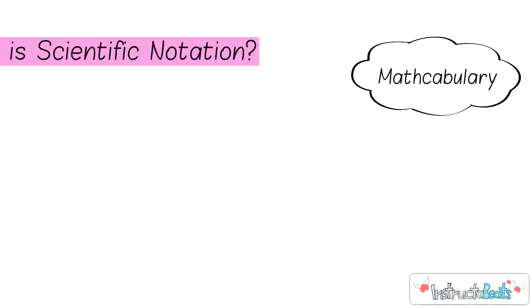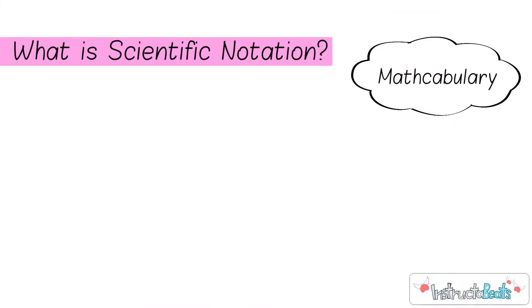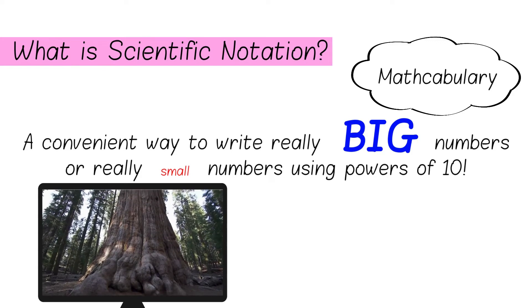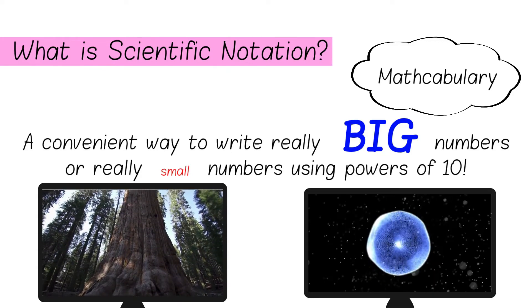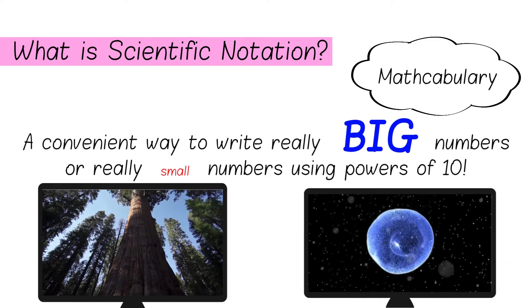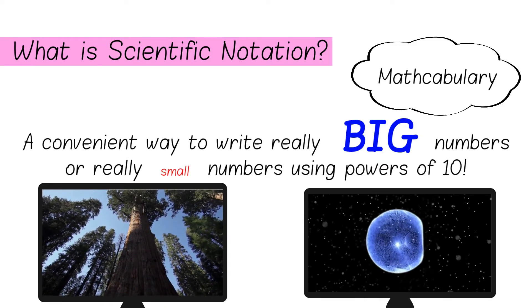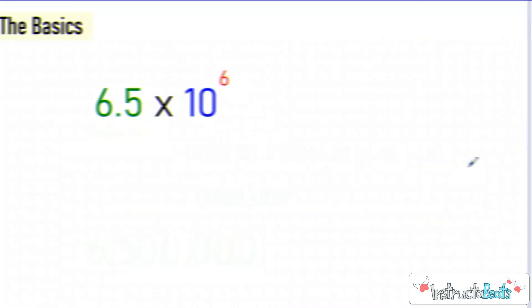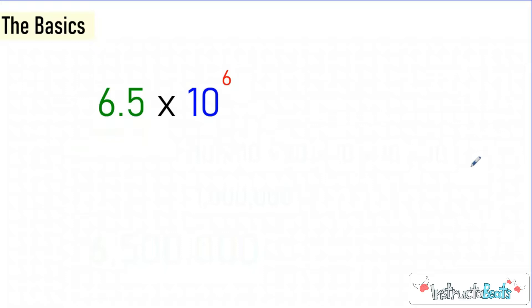So what is scientific notation? Scientific notation is a convenient way to write really big numbers, kind of like the weight of this giant sequoia tree, or really small numbers, kind of like the weight of this cell, using powers of 10. Today we're going to focus on writing really big numbers with lots of digits, shortening them and writing them in scientific notation.